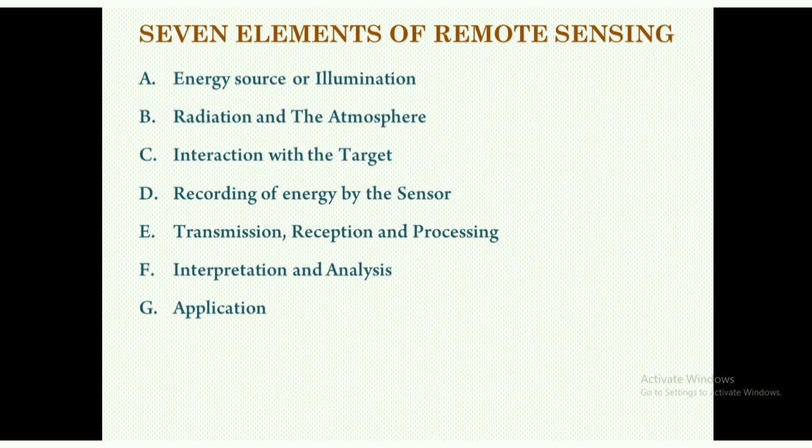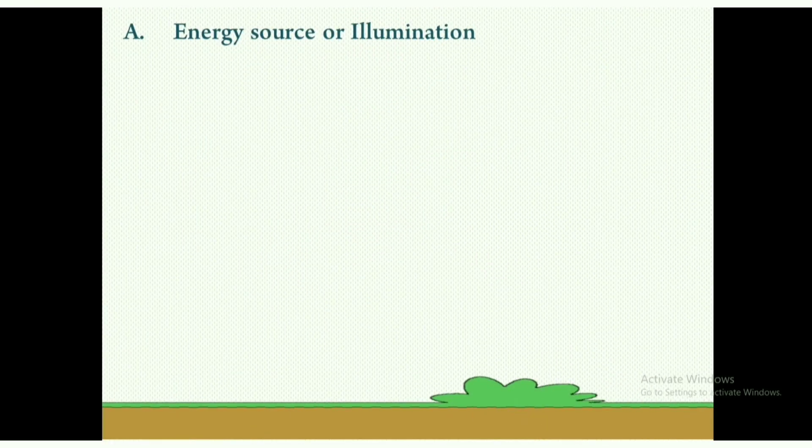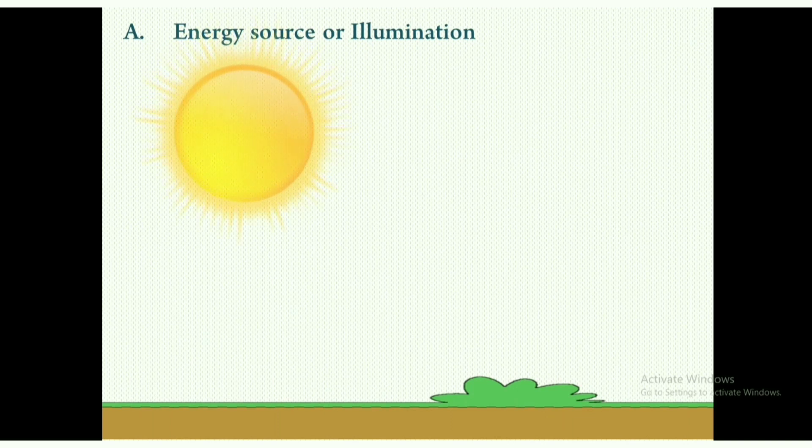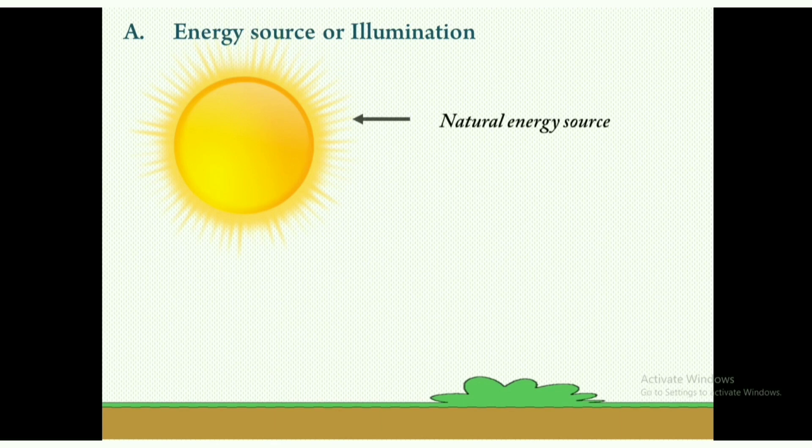The main natural energy source is our Sun, which produces its own light and heat, also known as illumination. In the first element, remote sensing needs an energy source where our natural sunlight helps us. It illuminates the energy to the targeted area on our earth.